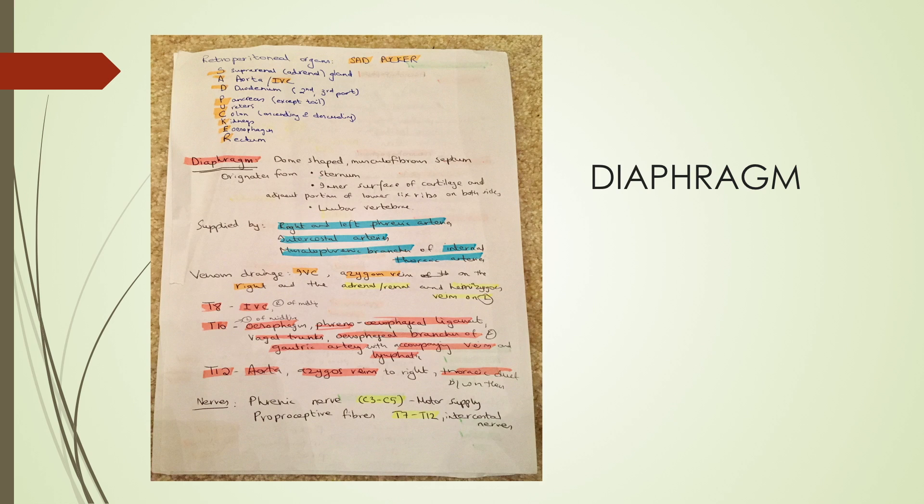Here I've also got the retroperitoneal organs. There's a mnemonic called SAD PUCKER. S is for the suprarenal or adrenal glands, A is for aorta and IVC, D is for the duodenum but the second and third part, P is for the pancreas except the tail, U is for the ureters, C is for the colon ascending and descending only, K is for the kidneys itself, E is for the esophagus but the American spelling starting with E not O, and R is for the rectum. These are things that are retroperitoneal, and that's what I've covered here.